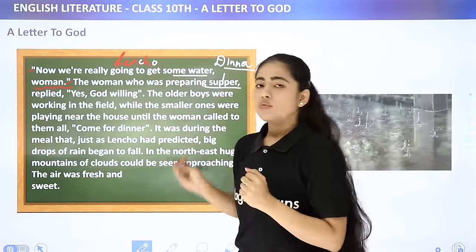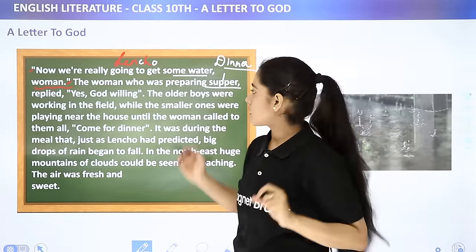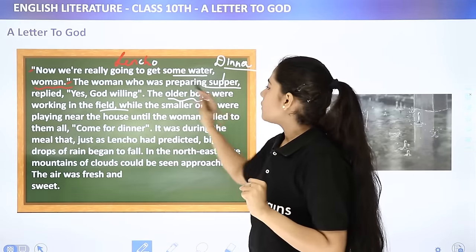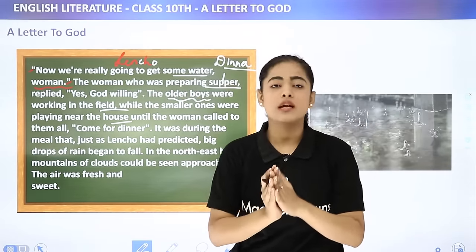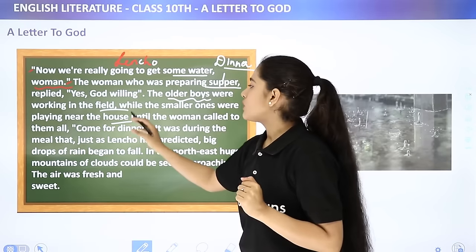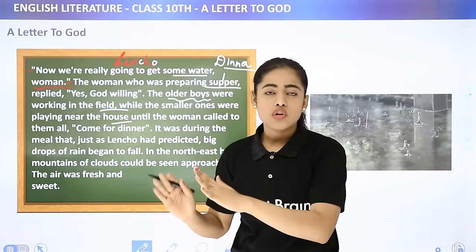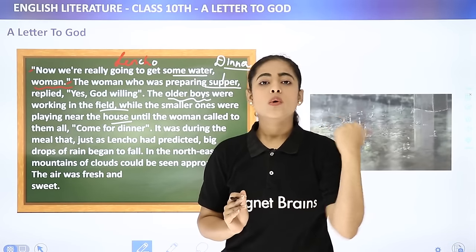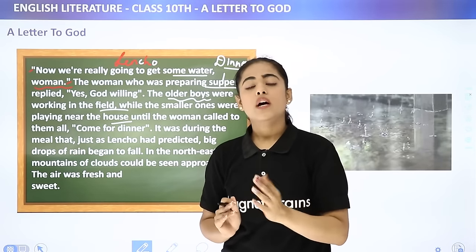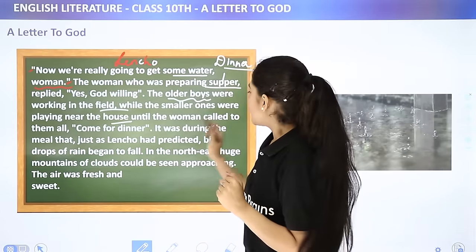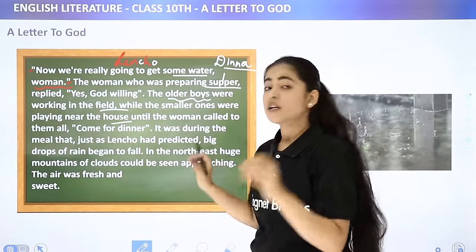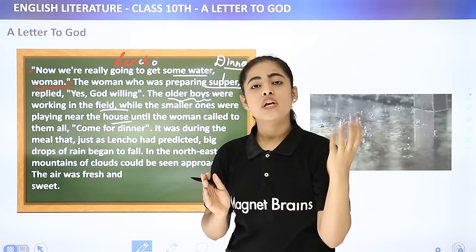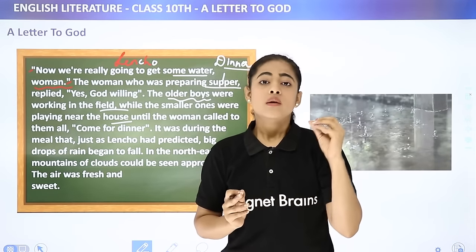The older boys were working in the field while the smaller ones were playing near the house. Until the woman called to them all: 'Come for dinner!' She had prepared supper and called both the older boys working in the field and the younger children playing outside. It was during the meal — just as Lencho had predicted — that big drops of rain began to fall.